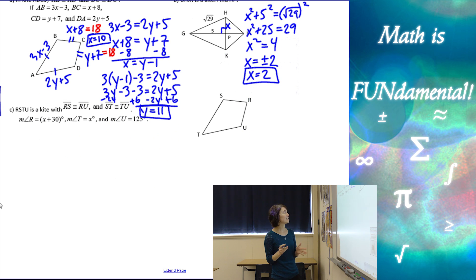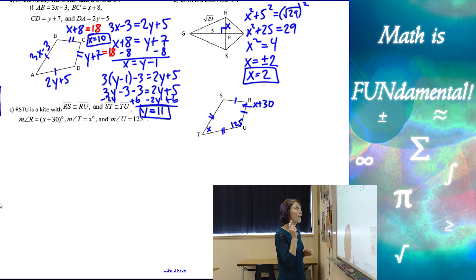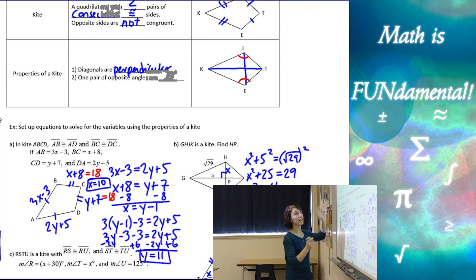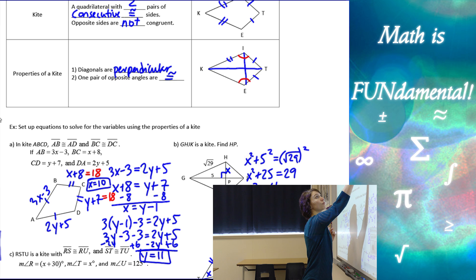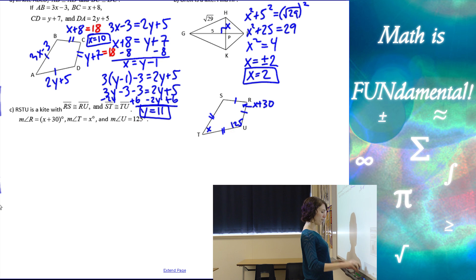And our last example. We have a kite. rs is congruent to ru. st is congruent to tu. The measure of r is x plus 30 degrees, and the measure of t is x, and the measure of u is 125. Now, remember, in a kite, we have one pair of angles that are congruent to each other, but it's not the x in the x plus 30 angles. If we look up here, it's the angles in between the two non-congruent sides that are going to be congruent to each other. So, here, if u is 125, then I know that s also has to be 125.